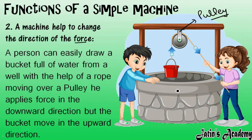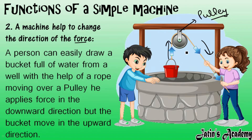Here we use a pulley to lift the bucket up from the well. If you were to apply force directly on the handle of the bucket and pull it up, it is very difficult. With a pulley, a rope is attached and we pull the rope toward ourselves in a downward direction — by pulling it downward, the bucket comes up in an upward direction.